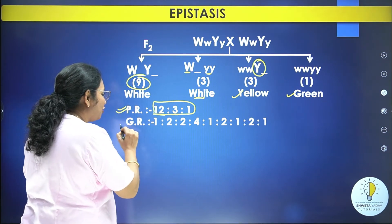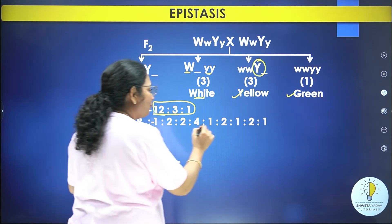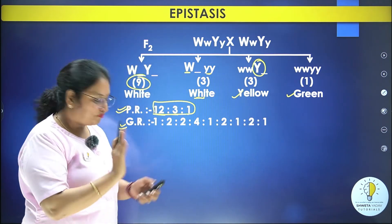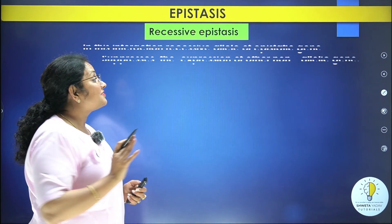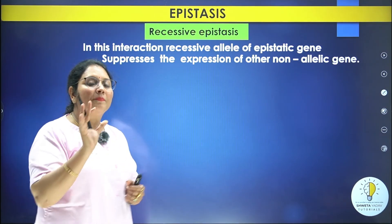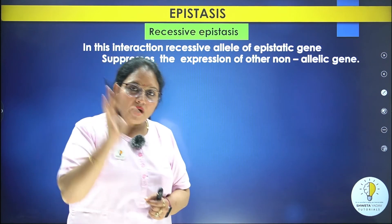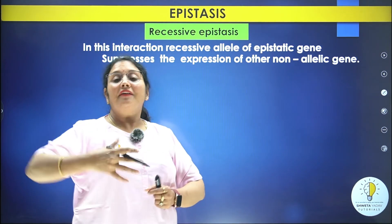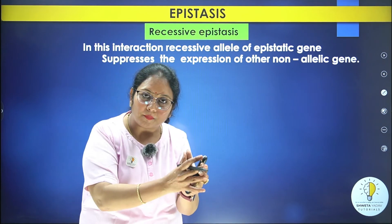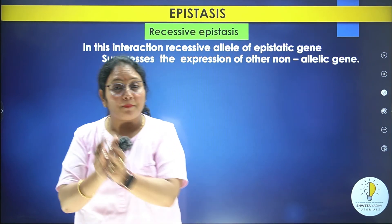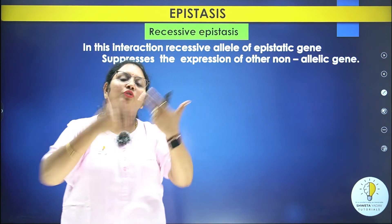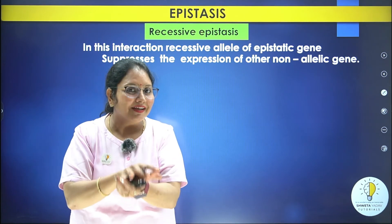The phenotypic ratio is 12:3:1, which is a modification of the Mendelian dihybrid cross ratio 9:3:3:1. Now we will discuss recessive epistasis. Dominant epistasis states that the epistatic gene is present in its dominant form and masks the expression of the other gene.